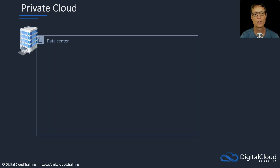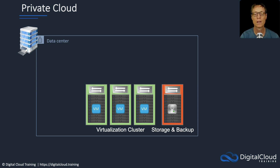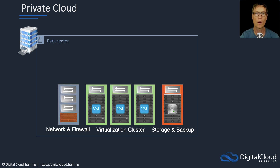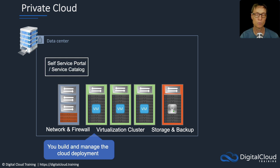With the private cloud, you have your own data center and must build the infrastructure in it. That might include a virtualization cluster running virtual servers, storage and backup systems, and network and firewall systems — all of which you build and manage yourself. On top of that, you'll need software to turn this into an actual cloud computing offering, including self-service portals and service catalogs so people have that on-demand self-service capability.